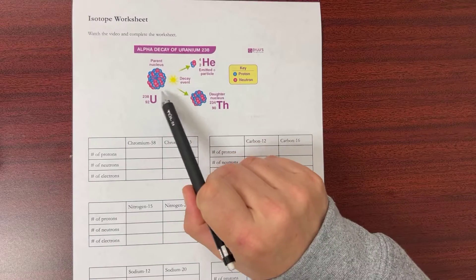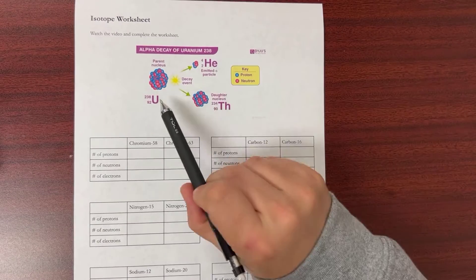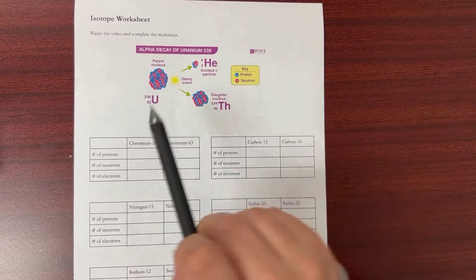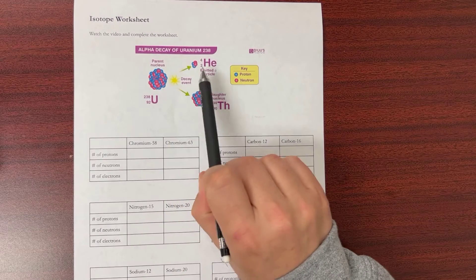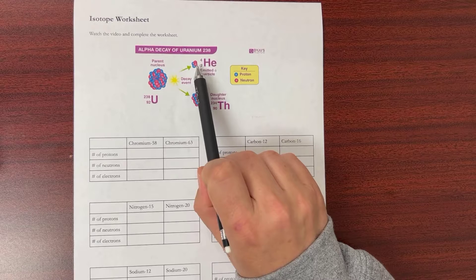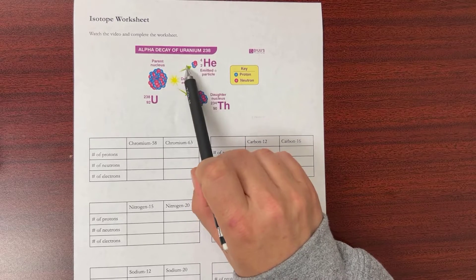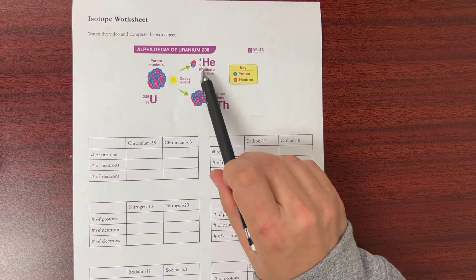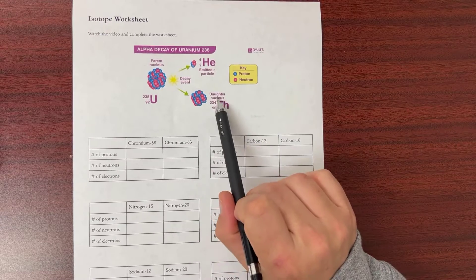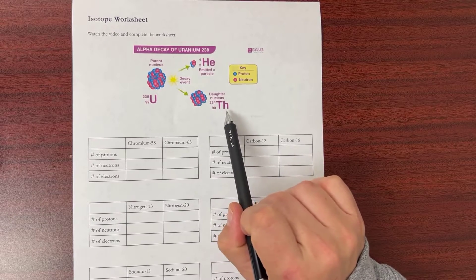atom going through radioactive decay, which is what we've been talking about with Chernobyl. When it does that, we've got a small alpha particle, which is like a helium nucleus, that comes out of this reaction. Since you lost some mass, you get a different element, in this case thorium. That's radioactive decay.